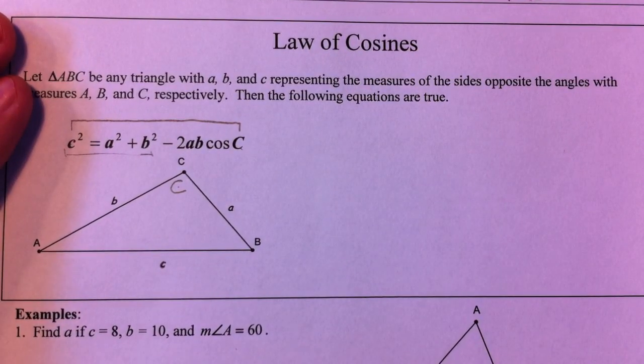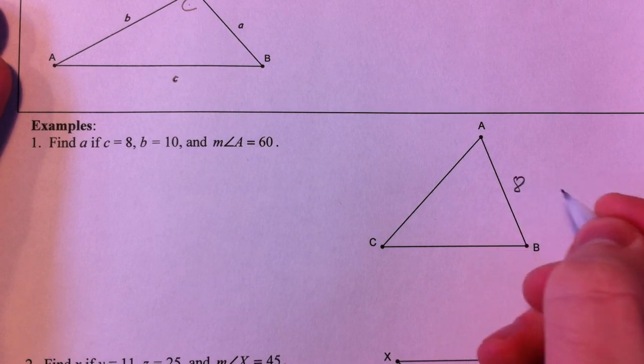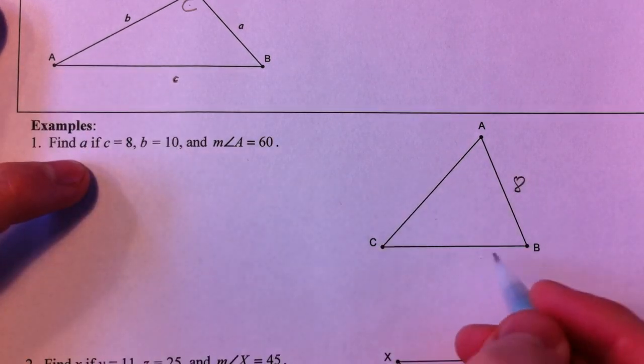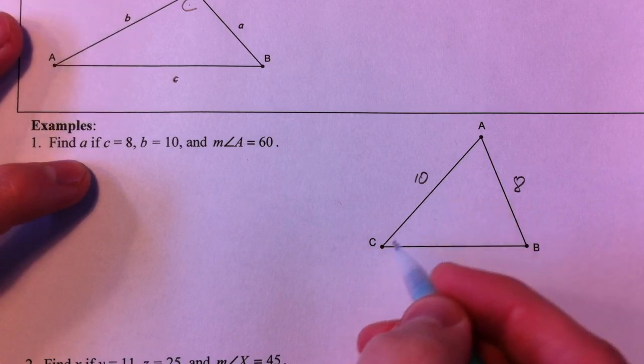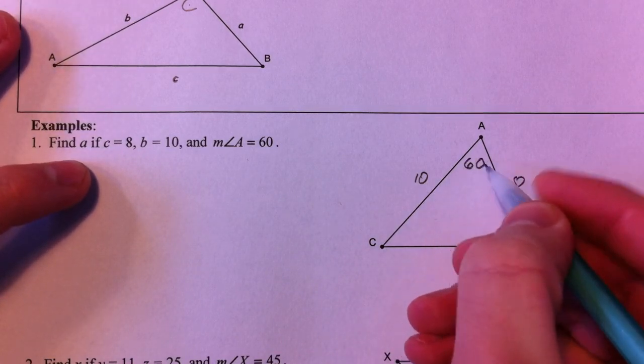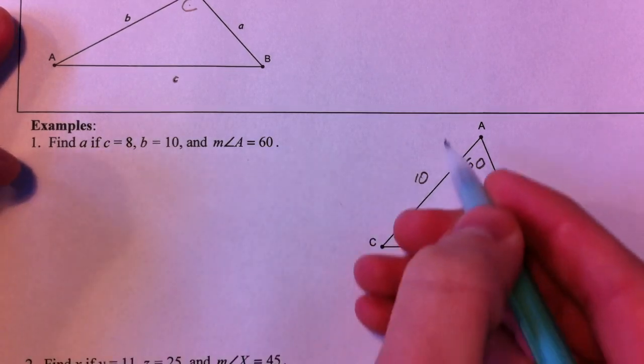So if c equals 8, b equals 10, opposite of B, and angle A is 60, we want to find a, lowercase a.